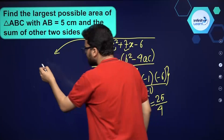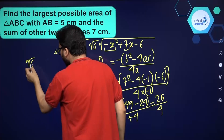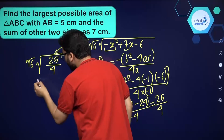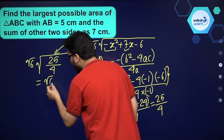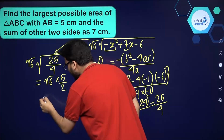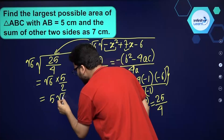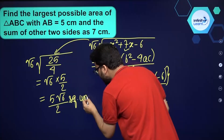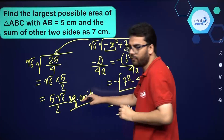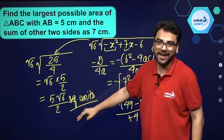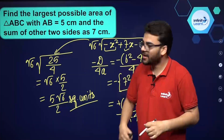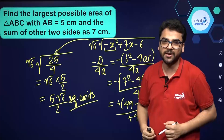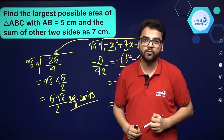So the maximum possible value of the expression is √6 times √(25/4), which equals √6 times 5/2, giving us 5√6 upon 2 square units. Therefore, the maximum possible area of a triangle in which one side is 5 centimeters and the sum of the other two sides is 7 centimeters is 5√6/2 square units.